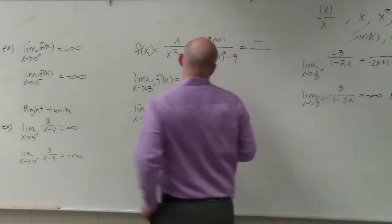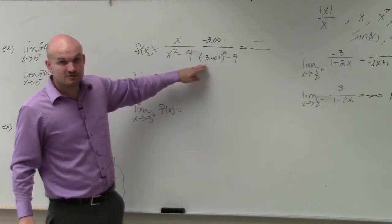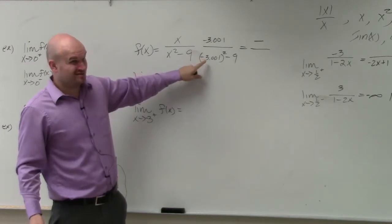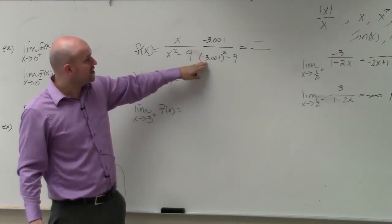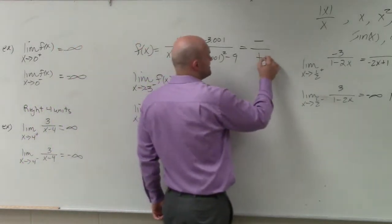In the denominator, if you have a number that's now larger than 3, would you guys agree? This number squared is going to be larger than negative 3 squared. Not by much, but it is. So that's now larger than 3 squared, and minus 9 is going to give you a positive number.